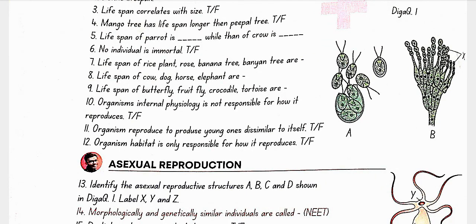Lifespan of animals: cow is 20 to 25 years, dog is 25 to 30 years, horse is 60 years, elephant is 60 to 90 years. Butterfly is 1 to 2 weeks, fruit fly is 2 weeks, crocodile is 60 years, and tortoise is 100 to 150 years.